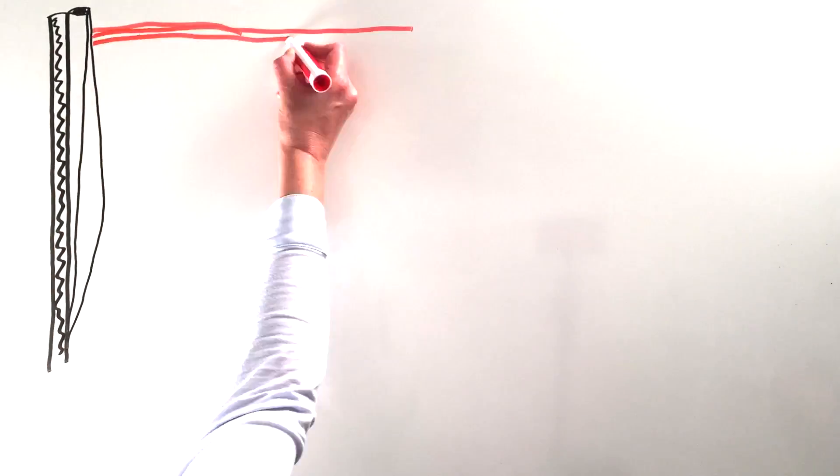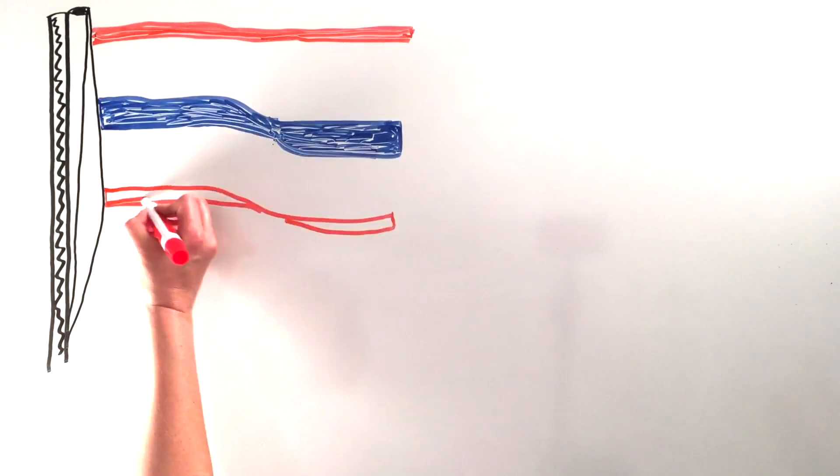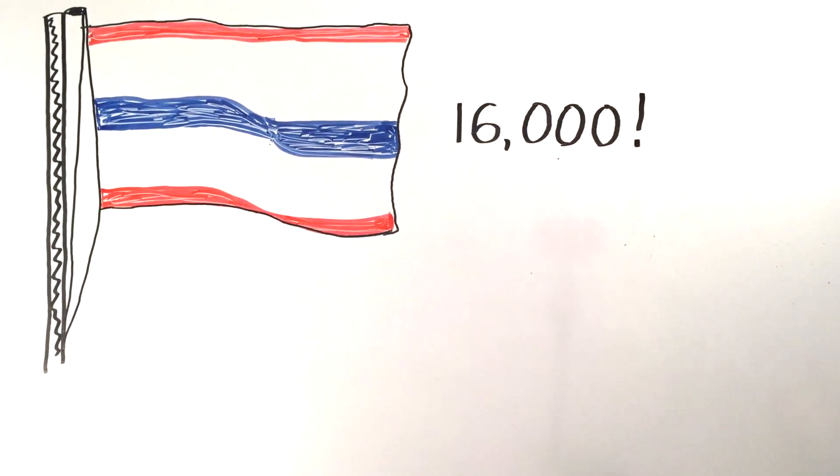In 2009, results from a study in Thailand involving more than 16,000 participants provided the first signal of efficacy for an HIV vaccine.